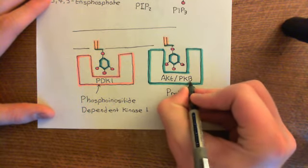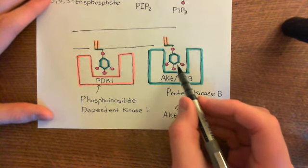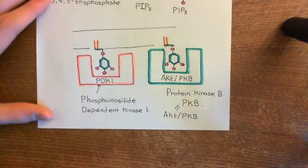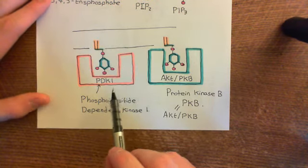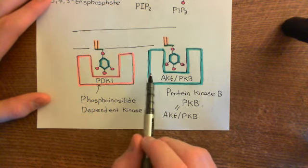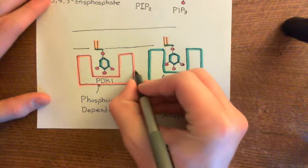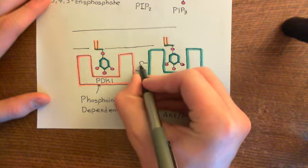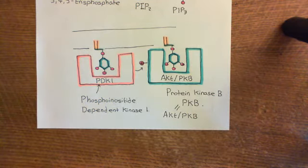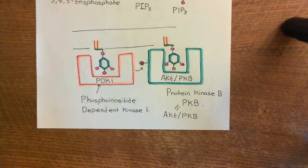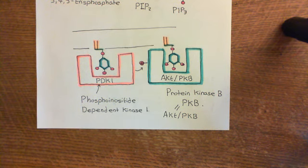Protein kinase B (AKT), when it binds to phosphatidylinositol-3,4,5-trisphosphate, is not going to be activated. It's different from PDK1 — it just localises at the plasma membrane and is now a perfect target for PDK1, because they're both at the inner leaflet of the phospholipid bilayer. What's going to happen is that PDK1 is going to stick a phosphate group — shown as a little purple ball — onto the AKT/protein kinase B enzyme, and that is going to activate AKT. This enzyme will then carry out reactions leading to the activation of another transcription factor, which we'll continue discussing in the next video.